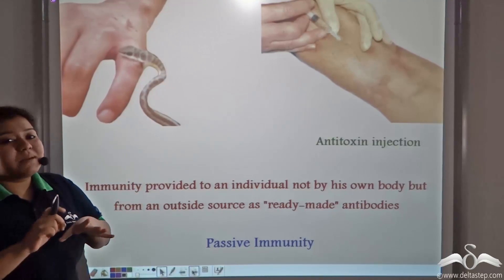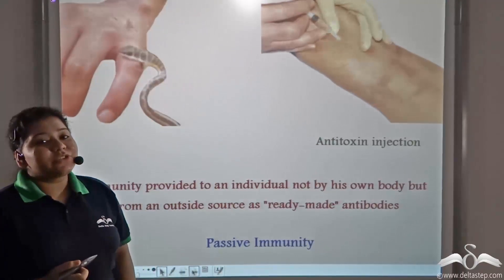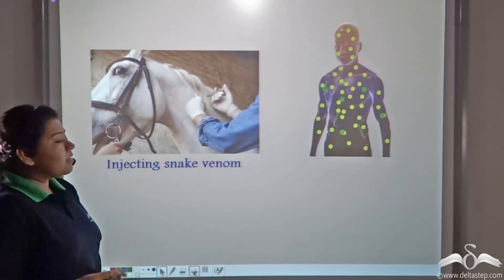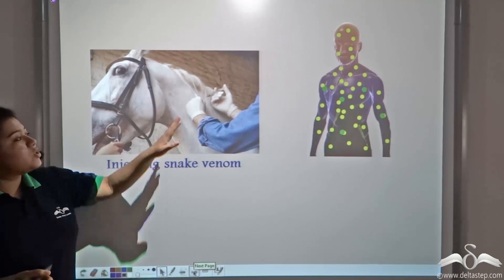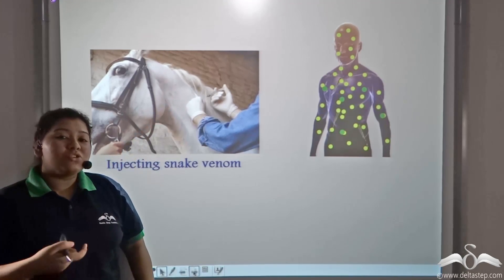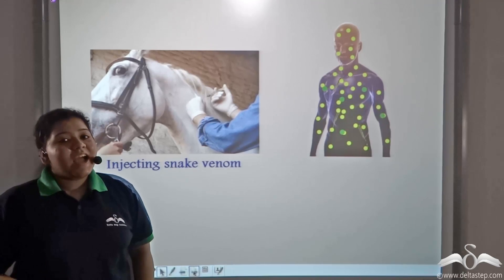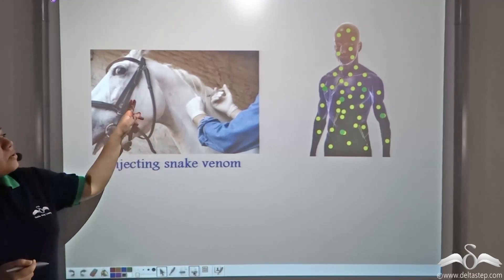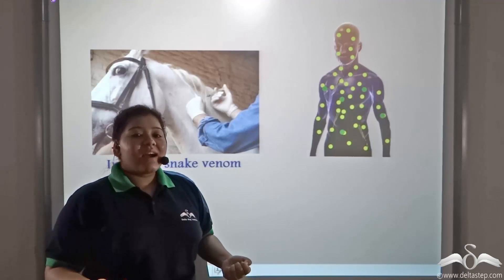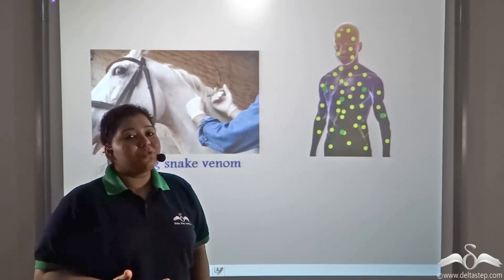If a person gets bitten by a snake, ready-made anti-toxin injections are injected into his body. Now how is this anti-toxin made? Snake venom is injected into an animal that does not show any effect of the snake venom. We do not inject snake venom into human bodies because most of the time these snake venoms are highly poisonous and might be fatal. So just like when weakened germs and toxins are injected into the body, antibodies and anti-toxins are produced to provide resistance.